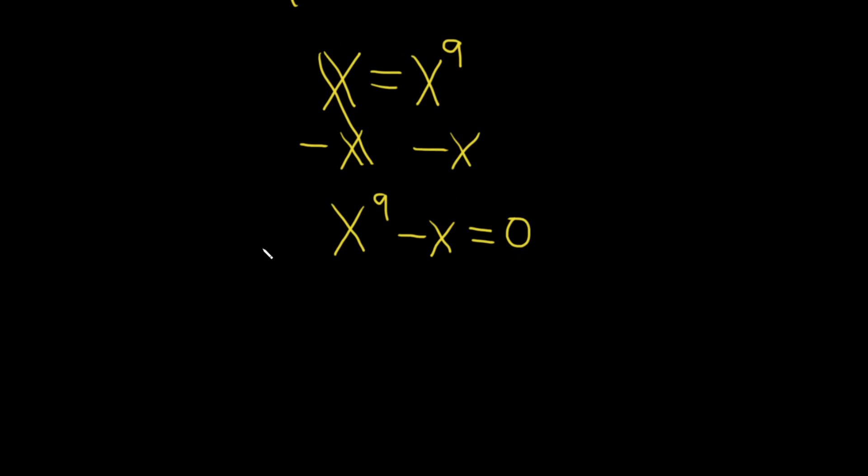And it looks like we can factor out an x. So let's go ahead and do that. So we have x parentheses and then to figure out what goes here, we have to ask ourselves, what do we multiply by x in order to get x to the ninth? Well, that would be x to the eighth and then minus. And then what do we multiply by x in order to get negative x? Well, that would be one and that's equal to zero.